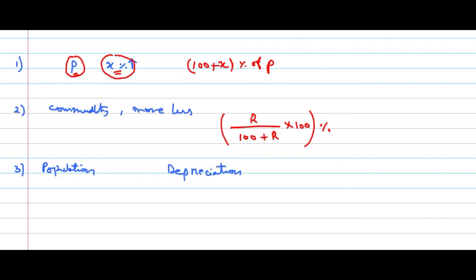If the commodity decreases by R percent, the increase in consumption will use minus in the formula: R divided by (100 − R) into 100 percent. Same formula can be repeated for comparison: if A is more than B, then B is less than A by that percentage using plus. If A is less than B, then how much B is more than A uses minus.